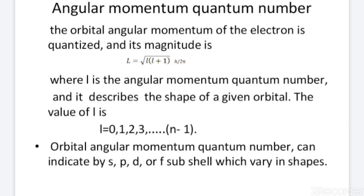The orbital angular momentum of the electron is quantized and its magnitude is capital L equals root of l(l+1) times h upon 2π, where small l is the angular momentum quantum number and it describes the shape of a given orbital. The value of l goes from 0 to n minus 1. The orbital angular momentum quantum number can indicate the s, p, d, or f sub-shells, which vary in shape.